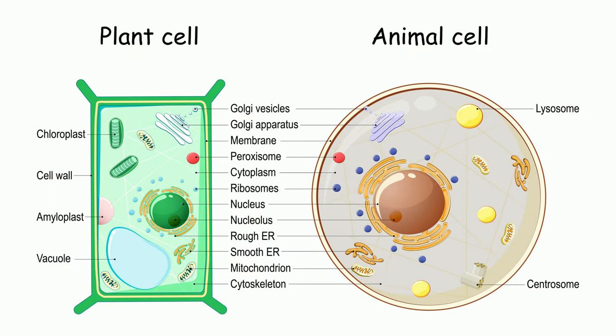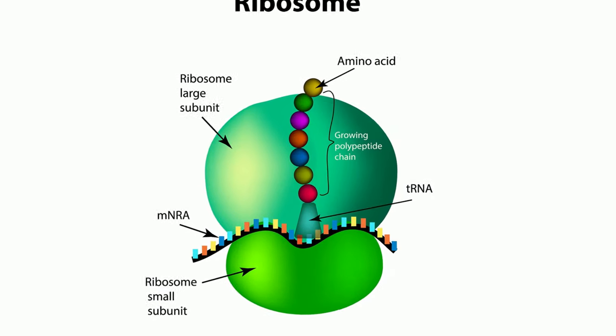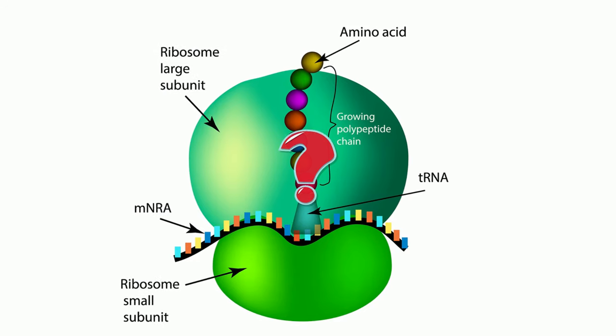When you look at the pictures of this plant and animal cell, you can see tiny dots on the ER and in the cytoplasm. These dots are the ribosomes. But why are they important to the cell?